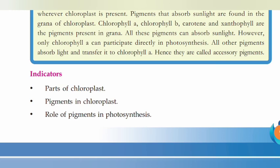This is the role of pigments in photosynthesis. In photosynthesis, chlorophyll A is the director — we say chlorophyll A is the director of photosynthesis. The other pigments absorb light and transfer it to chlorophyll A. All other pigments absorb light and transfer it to chlorophyll A.